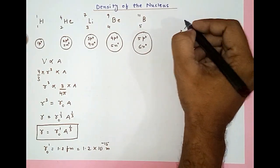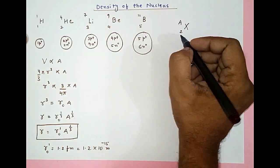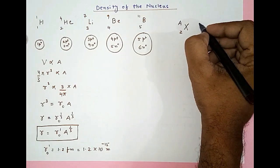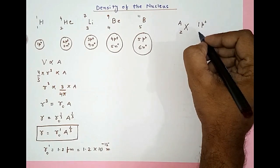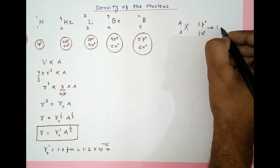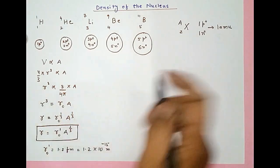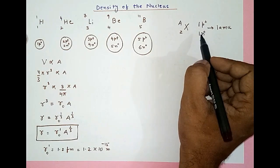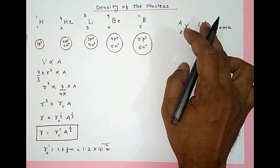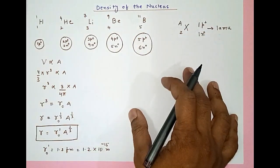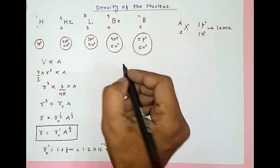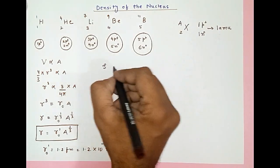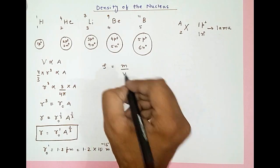Suppose we have an element X_Z^A, where Z is the proton number or atomic number and A is the mass number. For simplicity, we are going to consider the mass of one proton and one neutron as the same — both equal to 1 amu (atomic mass unit). A neutron is slightly heavier than a proton, but this won't significantly affect our result. The density of the nucleus equals the mass of the nucleus divided by the volume of the nucleus.